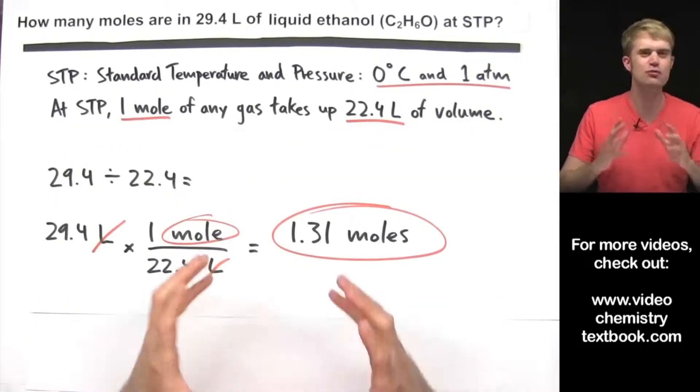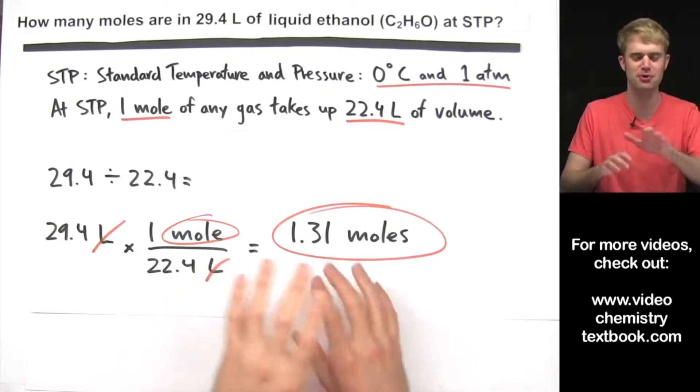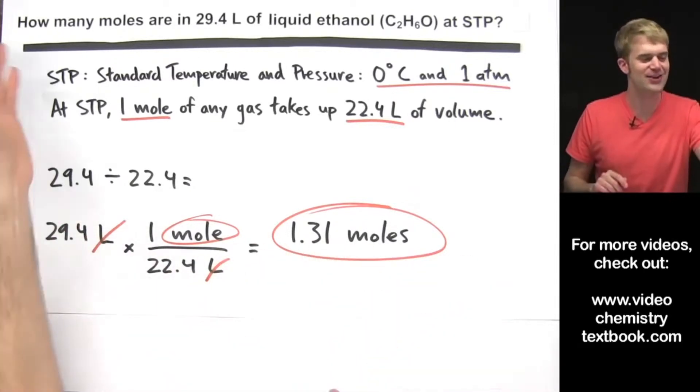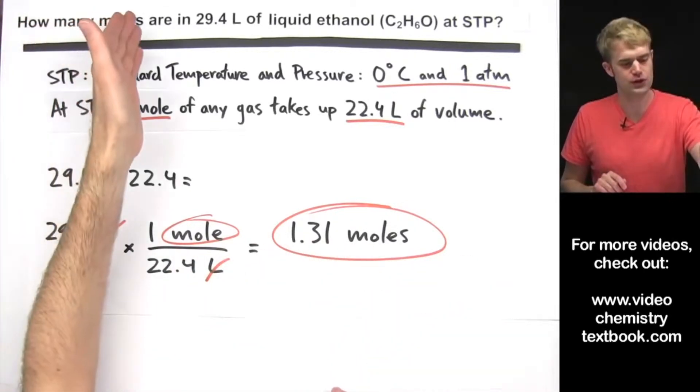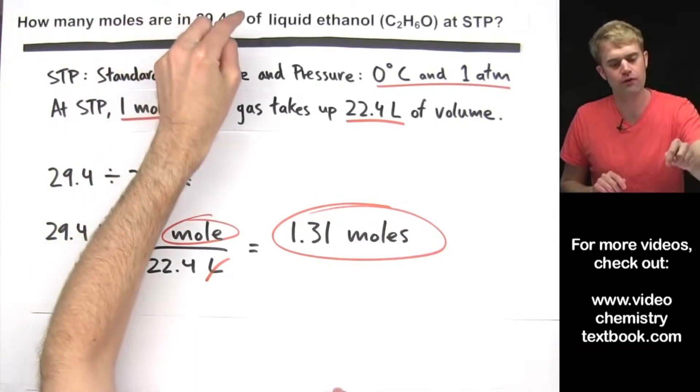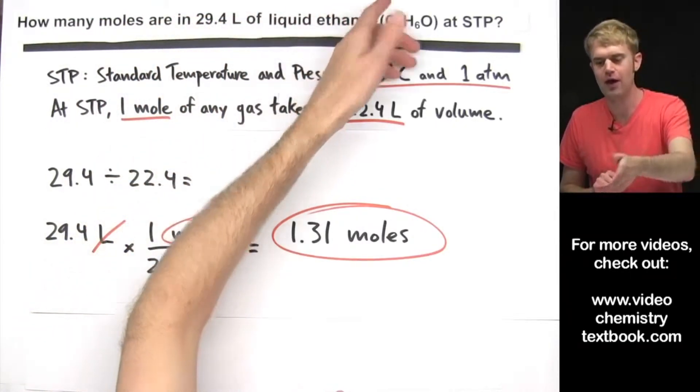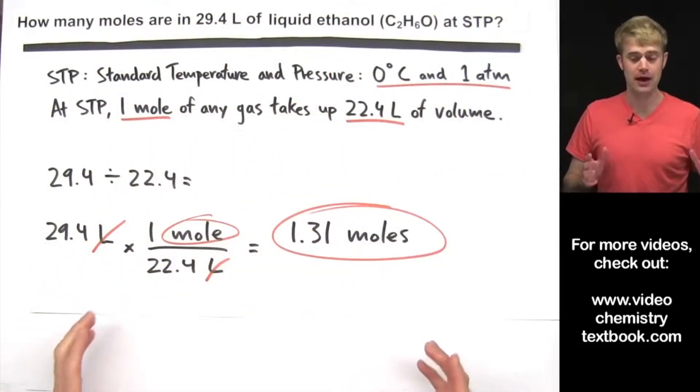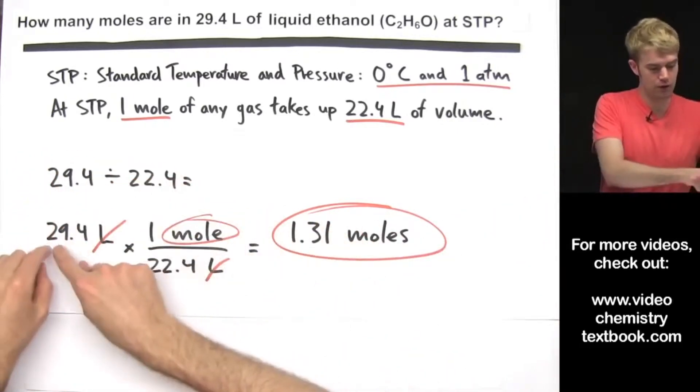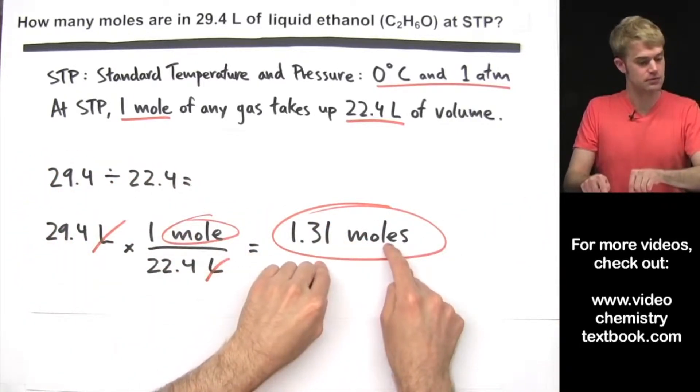Here's another really common mistake and it's super tricky. Sometimes teachers and textbooks really love this one. Here's how it goes. How many moles are in 29.4 liters of liquid ethanol at STP? And a student might solve this problem like this.